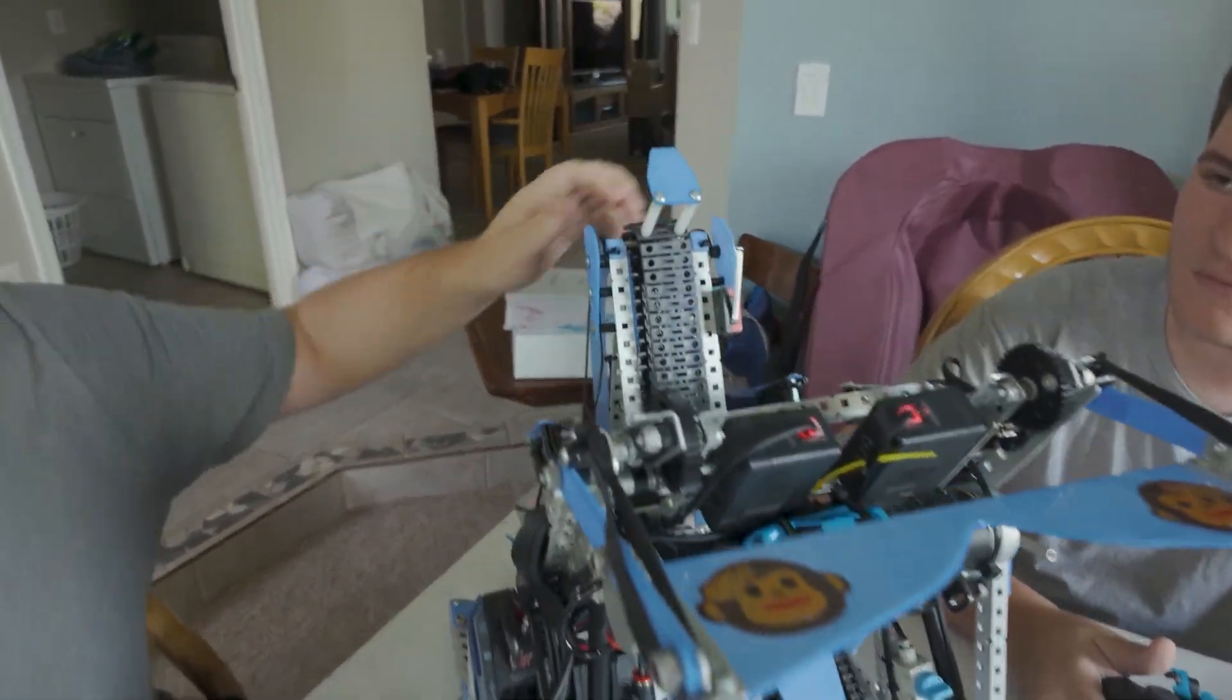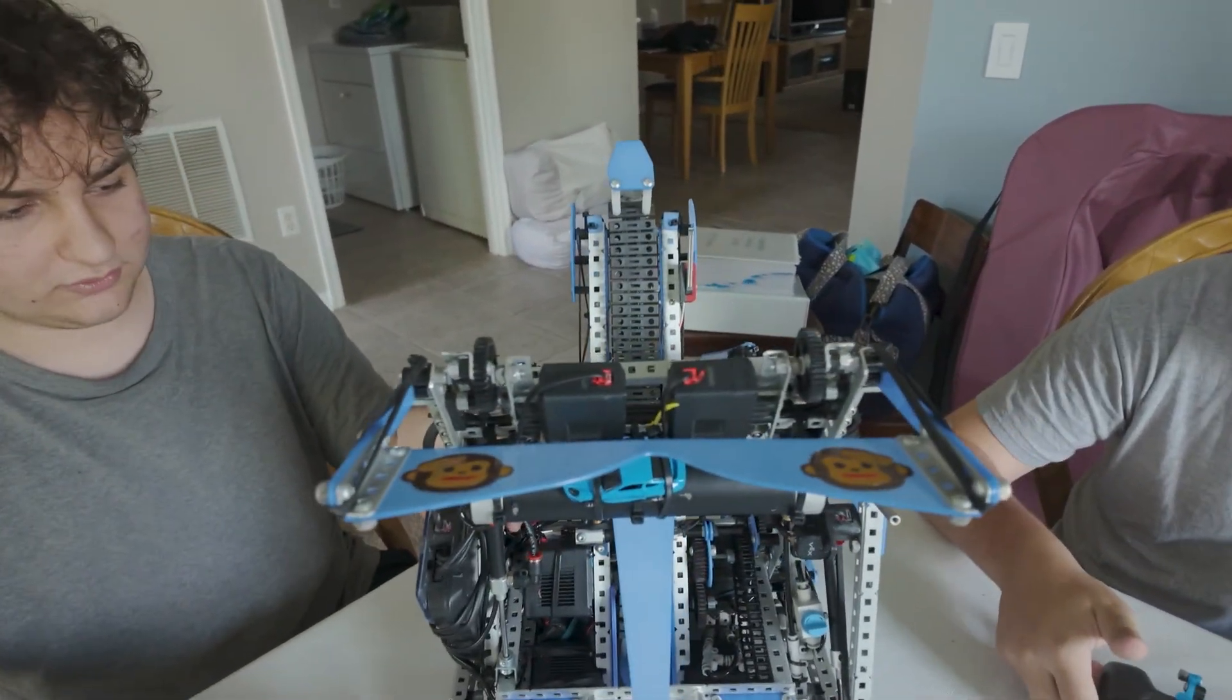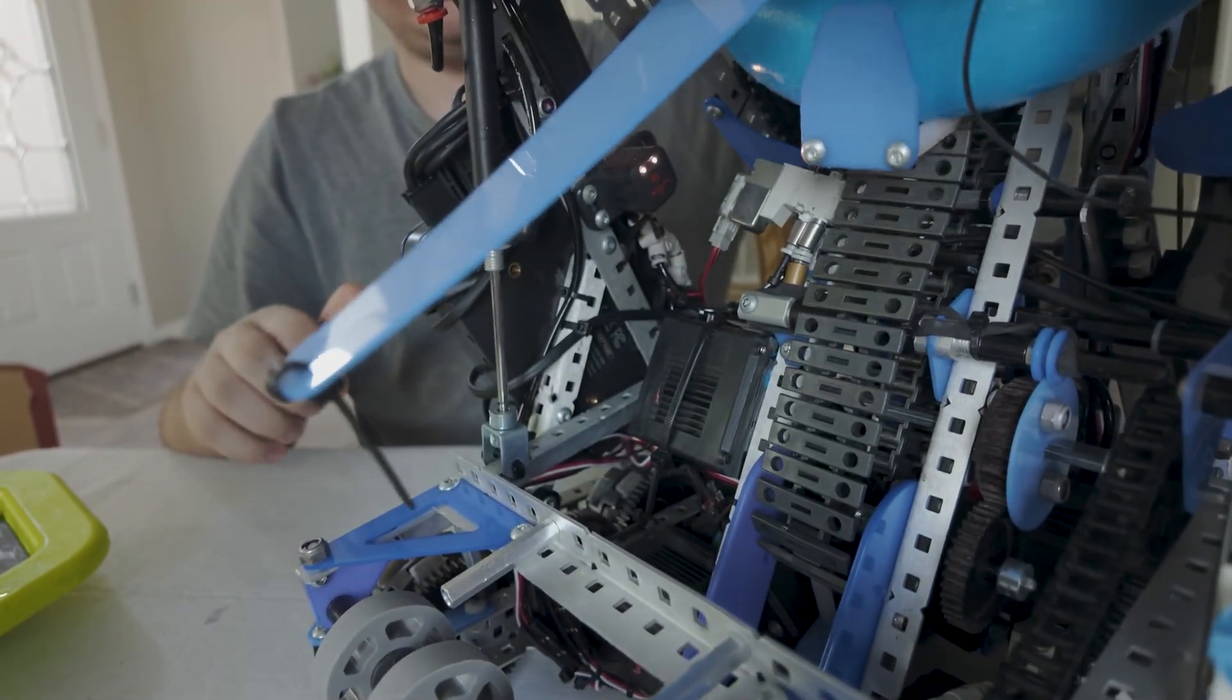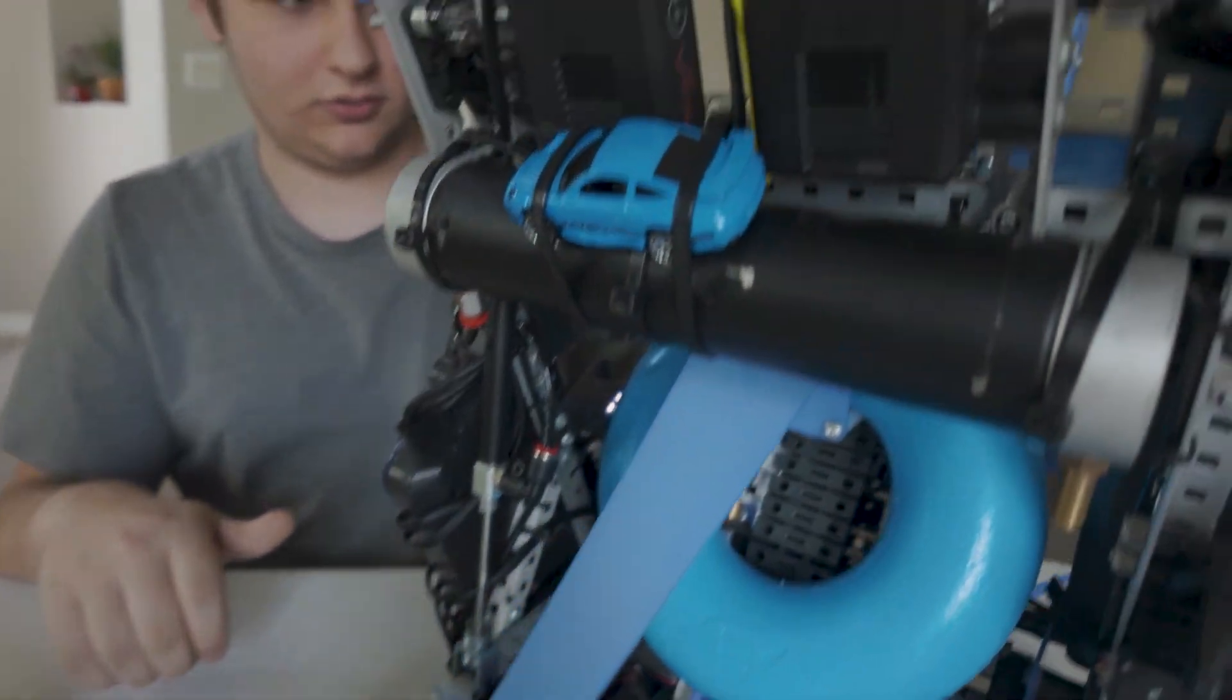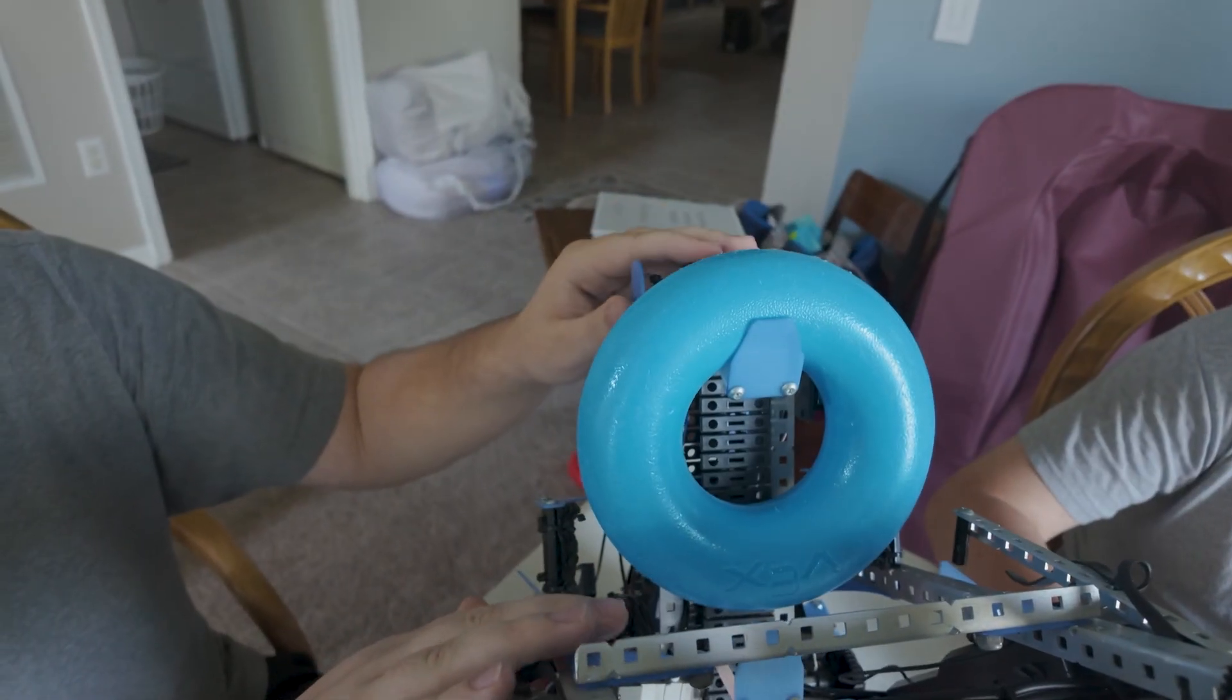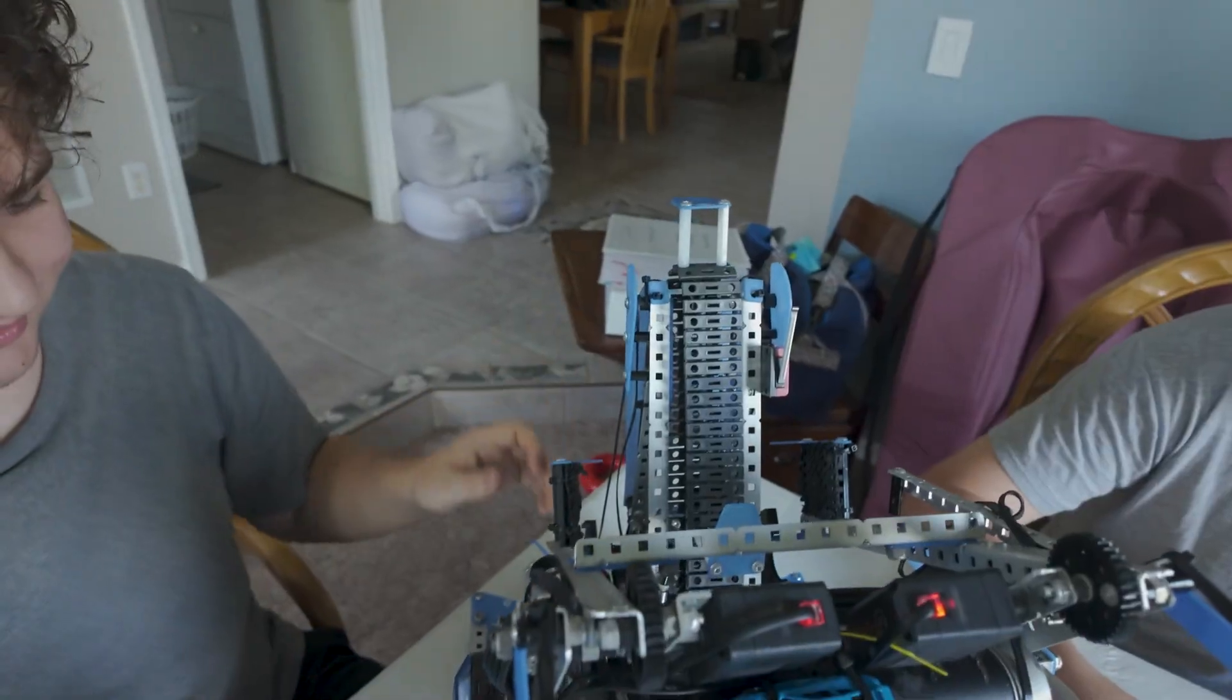We also use this limit switch for color sort. A good amount of teams use this, but we have the optical sensor a lot lower so that it can read the side of the ring. Giving it as much time as possible to read the ring meant that we had a lot more consistent detecting the wrong color. And then we have the limit switch up here that detects the exact moment that the ring reaches this height. And then it's going to eject it with velocity.